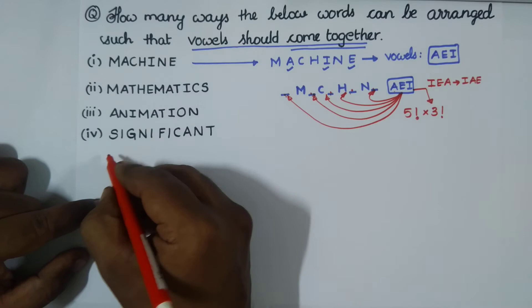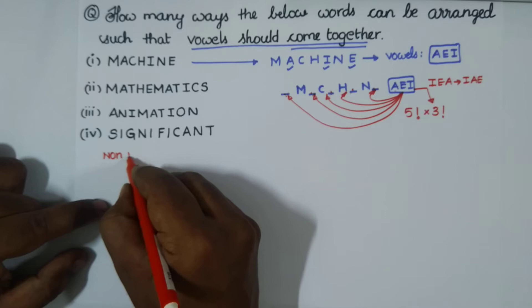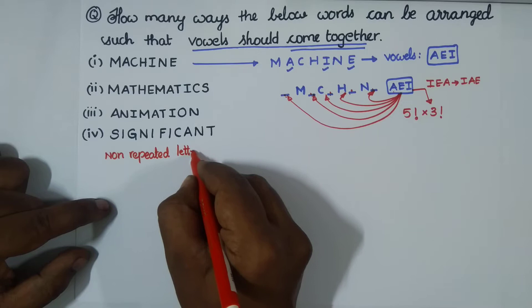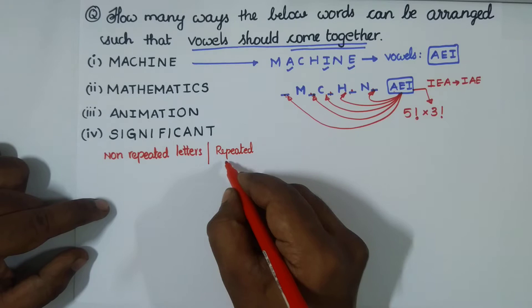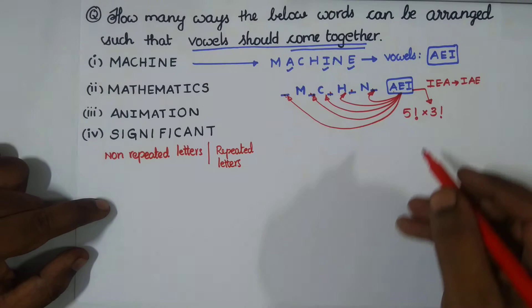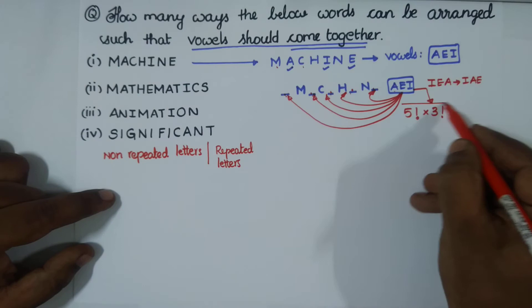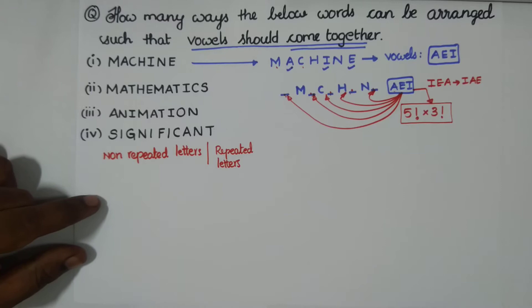MACHINE comes under the non-repeated letters category. Always check for non-repeated and repeated letters. None of the letters in MACHINE repeat. Whenever any letter repeats you must accommodate that in the denominator. Since no letter repeats in MACHINE, the final answer is 5 factorial multiplied by 3 factorial.